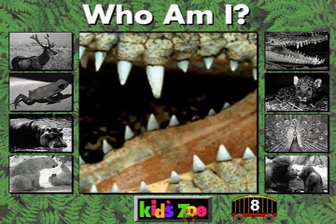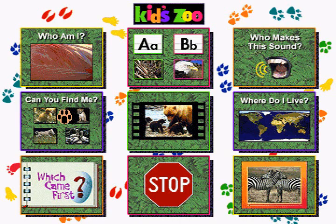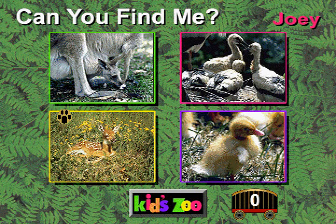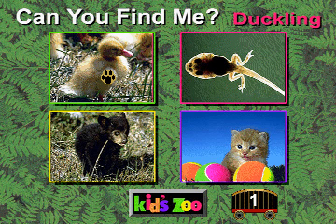Do you know your baby animal names? Try to get all the way to 12. I am a joey. Can you find me? You're right. I'm a joey, a baby kangaroo. I am a duckling. Can you find me? You're right. I'm a duckling, a baby duck.